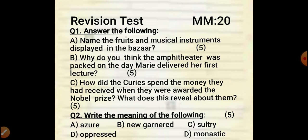There are three questions of five marks each. First: Name the fruits and musical instruments displayed in the bazaar. Second: Why do you think the amphitheater was packed on the day Mary delivered her first lecture? Five marks.